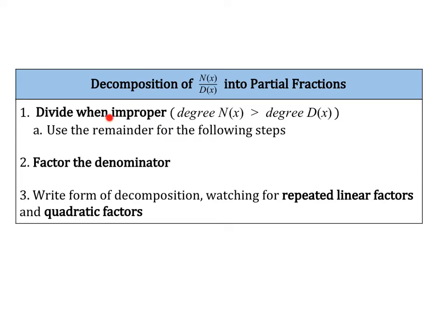If it's not improper, you skip straight to step two, which is to factor the denominator, and that's when you start to write it in the form of decomposition. The things to watch out for are repeated linear factors, which we talked about in the previous video, and also quadratic factors, which have a different setup — we're going to talk about those today, including repeated quadratic factors.